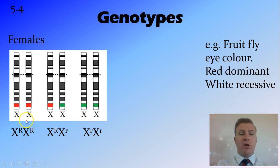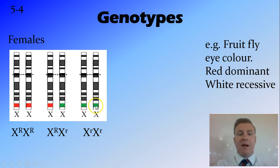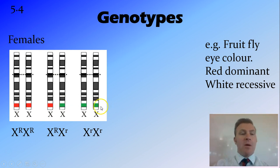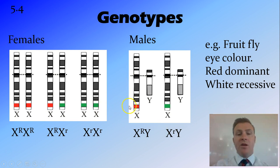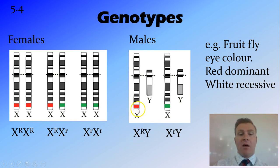For females it's fairly straightforward — they've got two X chromosomes and therefore two alleles, so the Mendelian ratios hold here. There are three possible genotypes: you can have the red allele and red allele, the red allele and white allele, or the white allele and white allele. For males, they only have one X chromosome, so there's only one allele possible, giving just two genotypes: the red allele on the X chromosome, or the recessive white allele on the X chromosome.